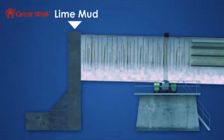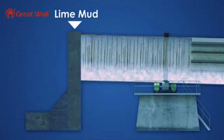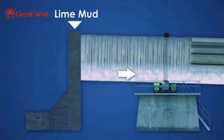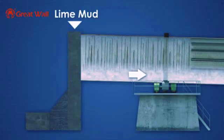Lime mud is continuously fed in at the higher end of the cylinder, and the rotation and incline of the kiln cause the mud to slowly move down toward the opposite end.